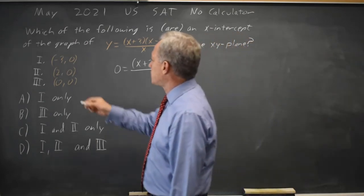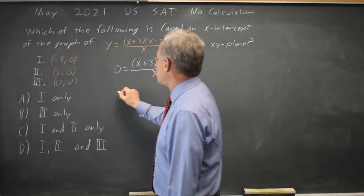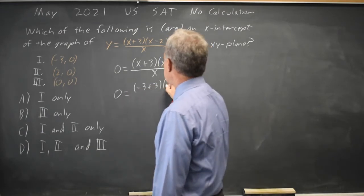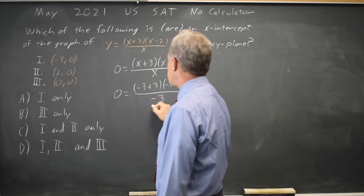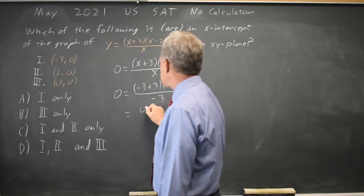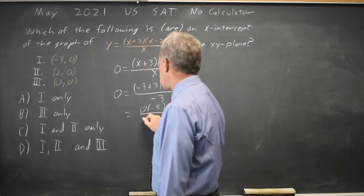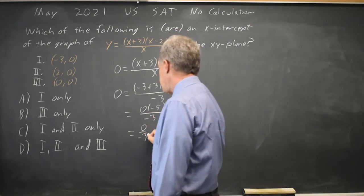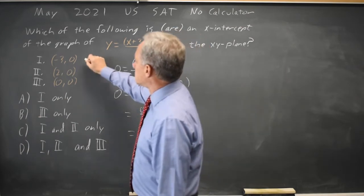I'm going to first plug in x-values. At x equals negative 3, I get 0 equals (-3+3)(-3-2)/(-3). That is 0 times negative 5 over negative 3, which is 0 over negative 3, which is 0. So that one does work. I've ruled out choice B.